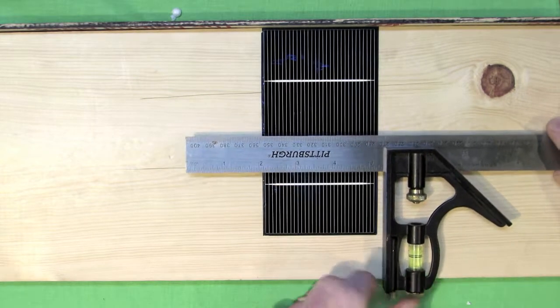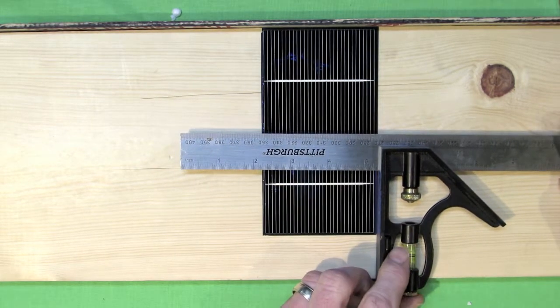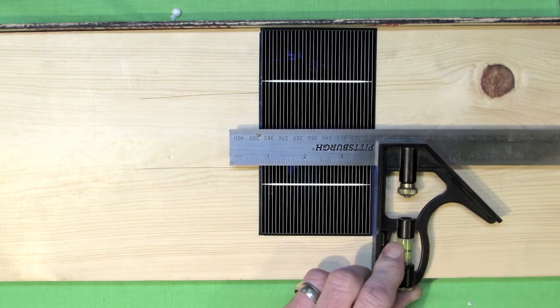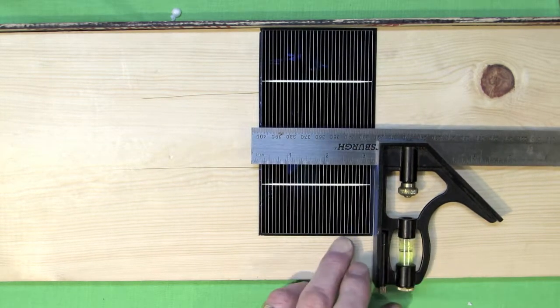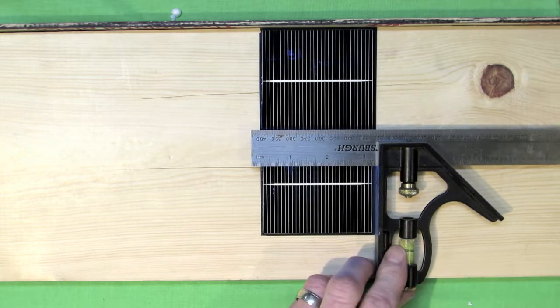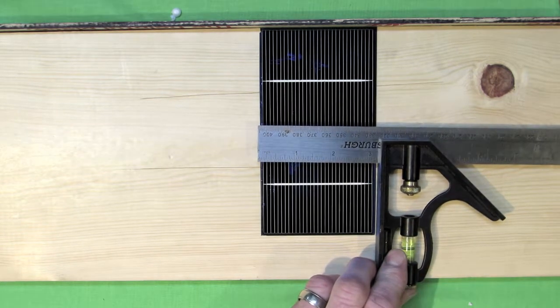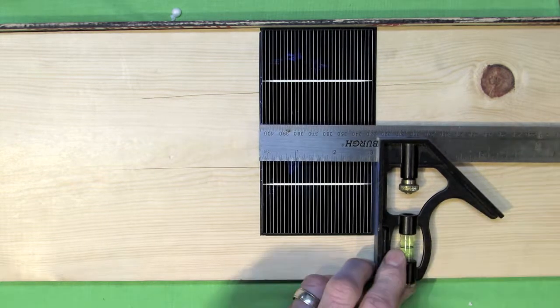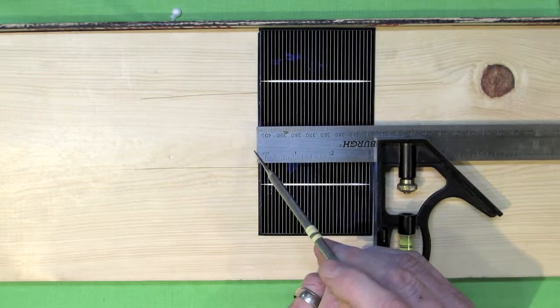Place it against the edge of the solar cell, and you simply slide the ruler portion back until it is just slightly, a millimeter, over the far edge of the solar cell.